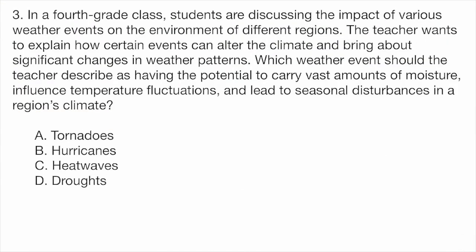Question three. In a fourth grade class, students are discussing the impact of various weather events on the environment of different regions. The teacher wants to explain how certain events can alter the climate and bring about significant changes in weather patterns. Which weather event should the teacher describe as having the potential to carry vast amounts of moisture, influence temperature fluctuations, and lead to seasonal disturbances in a region's climate? A, tornadoes. B, hurricanes. C, heat waves. Or D, droughts.